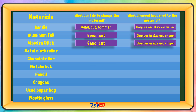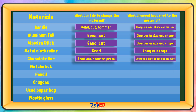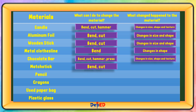Metal clothesline — what can I do to change the material? Bend. What change happened to the material? Changes in shape. Chocolate bar — what can I do to change the material? Bend, cut, hammer, and press. What change happened to the material? Changes in size, shape, and texture. Matchstick — what can I do to change the material? Bend and cut. What change happened to the material? Changes in size and shape.